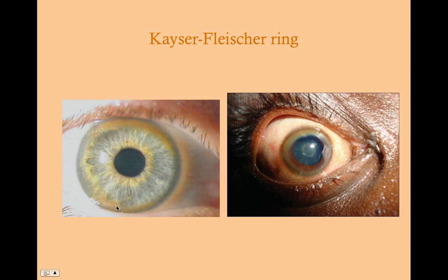This is the Kaiser-Fleischer ring — once you see it, you'll never forget it. This is copper depositing in the iris of a patient with Wilson's disease.